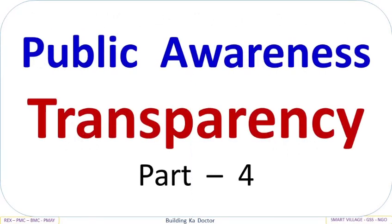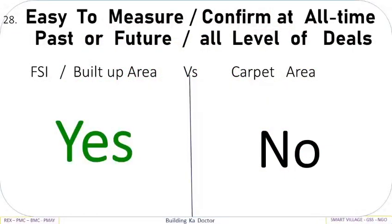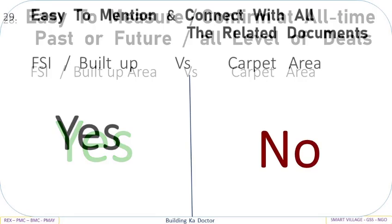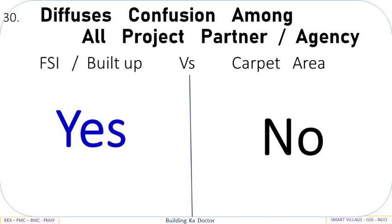Public Awareness and Transparency — Part 4. Jago Bharat Jago. Easy to measure and confirm at all times — past or future, at all levels of deals — FSI Built-Up Area: Yes, vs Carpet Area: No. Easy to mention and connect with all related documents — FSI Built-Up: Yes, vs Carpet Area: No. Diffuses confusion among all project partners and agencies — FSI Built-Up: Yes, vs Carpet Area: No.